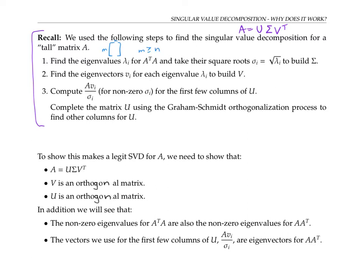First, we found the eigenvalues for the product A transpose times A, and we took their square roots to get our singular values sigma sub i. We put those sigma sub i's down the diagonal of an M by N matrix to get our matrix sigma. Next, we found length-one eigenvectors for A transpose times A and used them as our columns for the matrix V. The simplest situation is when A transpose A has all distinct eigenvalues, so we can just take one eigenvector for each eigenvalue. It's a little more complicated if A transpose A has repeated eigenvalues, and I didn't go into those details.